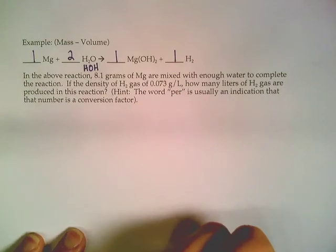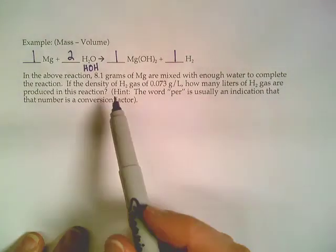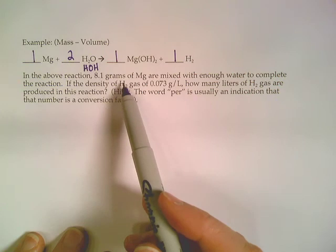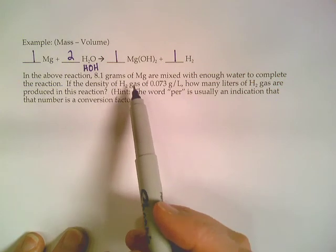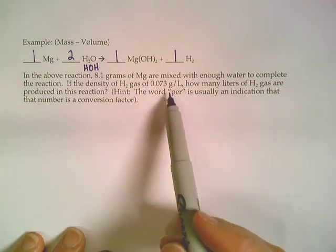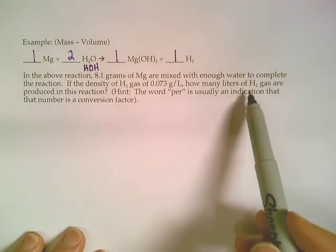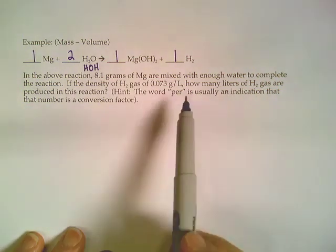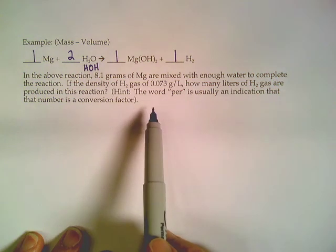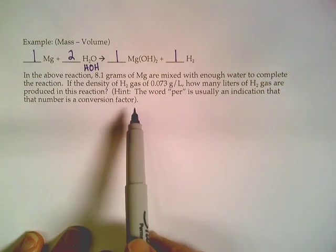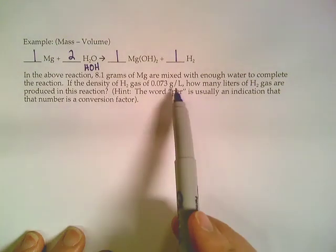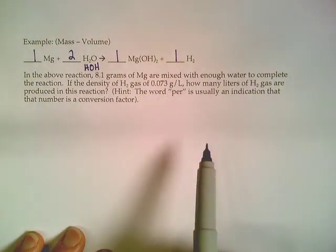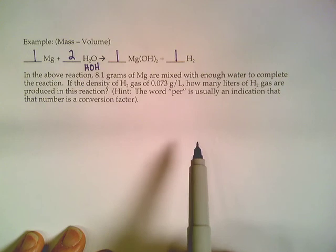So we've got a couple numbers in this problem. It tells us we're going to start with 8.1 grams of magnesium. It also gives us the density of hydrogen gas and wants us to figure out how many liters of hydrogen gas could be produced. And it gives us this little hint that the word 'per' is usually an indication that the number is a conversion factor. When you read this density out loud, you'd say 0.073 grams per liter.